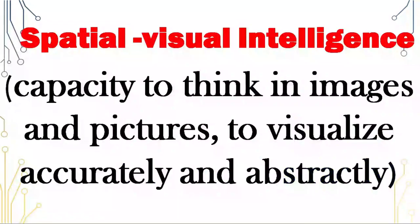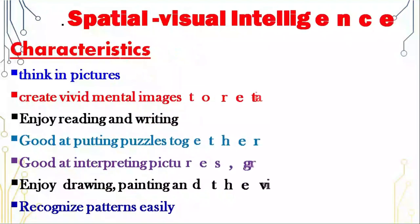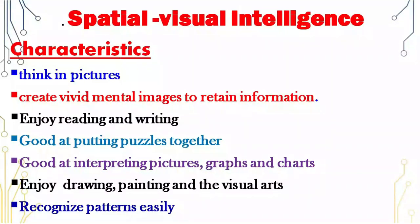Spatial visual intelligence: these people have the capacity to think in images and pictures, to visualize accurately and abstractly. Characteristics: these people think in pictures, create vivid mental images to retain information, enjoy reading and writing, are good at putting puzzles together, good at interpreting pictures, graphs and charts, enjoy drawing, painting and visual arts, and recognize patterns easily.